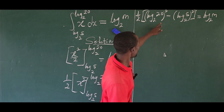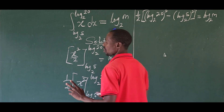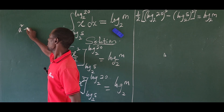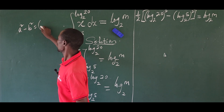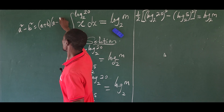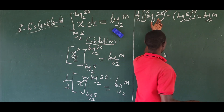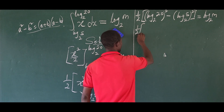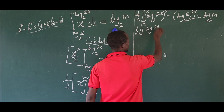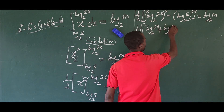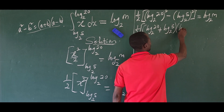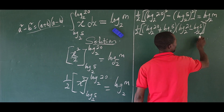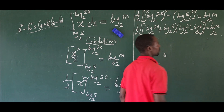Here we have a base raised to the power of 2 minus another base raised to the power of 2 — this is what we call the difference of two squares, which states that a squared minus b squared equals (a plus b)(a minus b). Applying that here, we get one-half times the quantity [(log 20 base 2 plus log 5 base 2)(log 20 base 2 minus log 5 base 2)], equal to log m base 2.